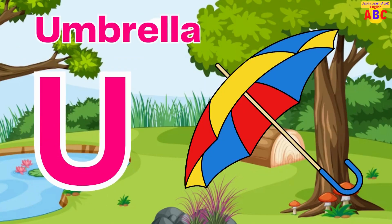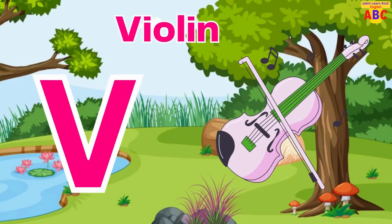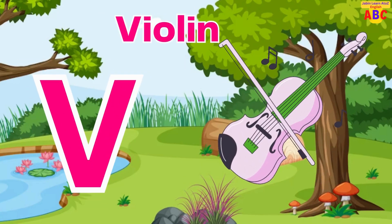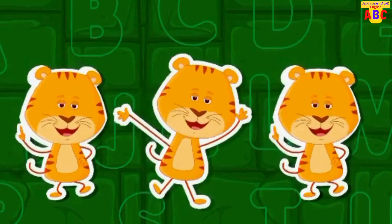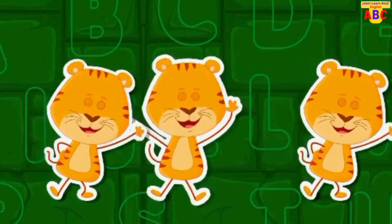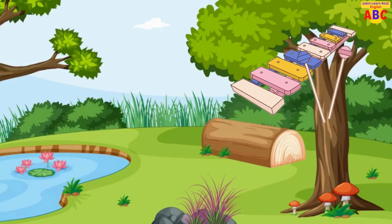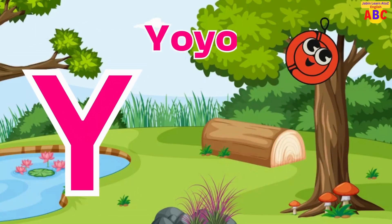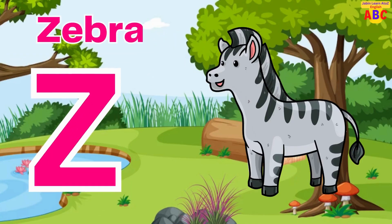U for Umbrella, B for Violin, W for Watch, X for Xylophone, Y for Yo-Yo, Z for Zebra.